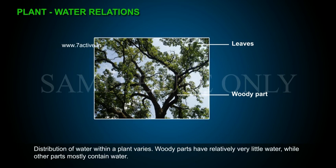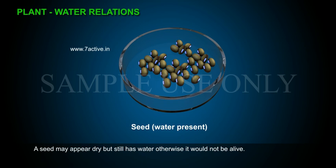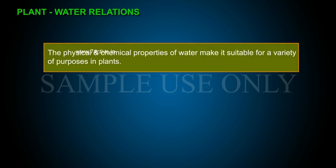Distribution of water within a plant varies. Woody parts have relatively very little water, while other parts mostly contain water. A seed may appear dry, but still has water — otherwise it would not be alive.